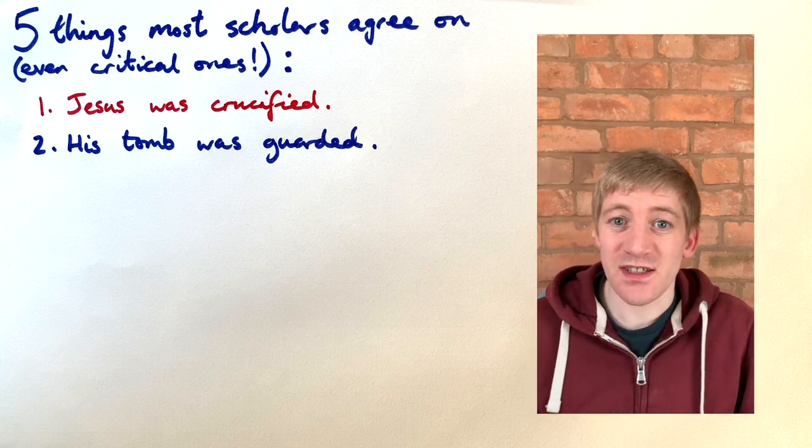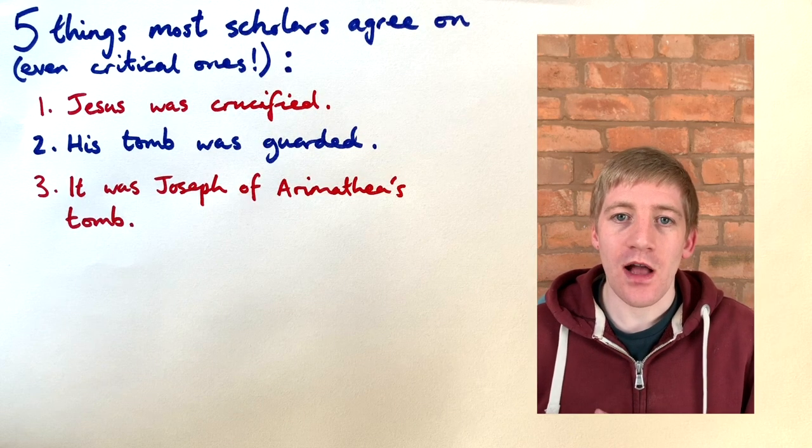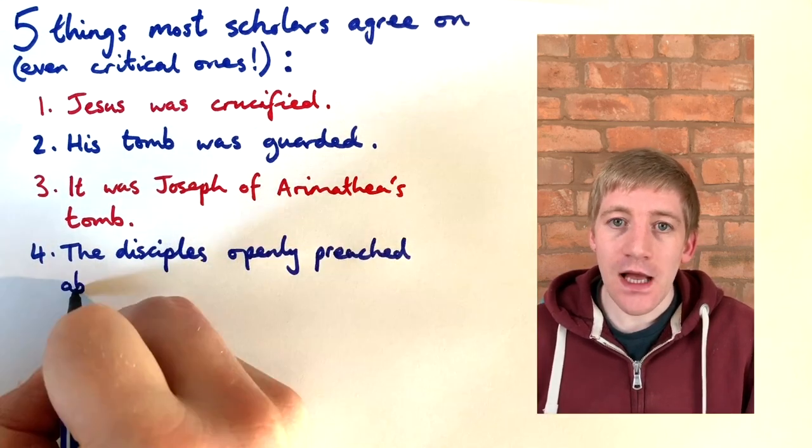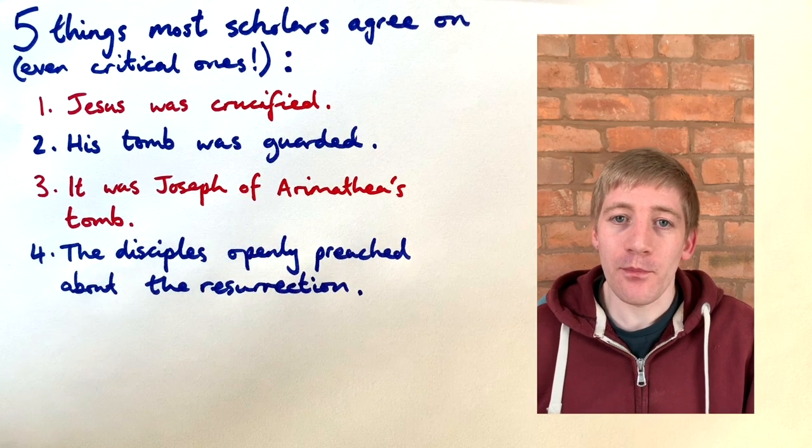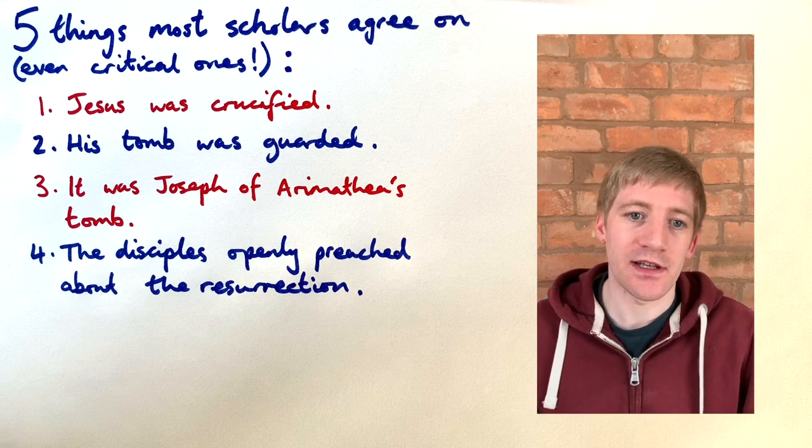Some people think there could be up to 16 to 50 people. Number three, he was buried in the tomb of a guy called Joseph of Arimathea, who was a prominent member of the Jewish council at the time. Four, his disciples afterwards went around preaching that he had risen from the dead and they started in Jerusalem, the place where it happened.